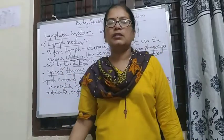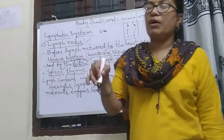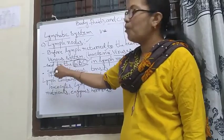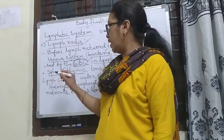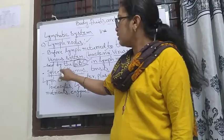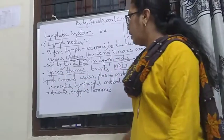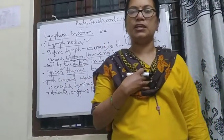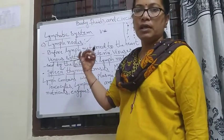Spleen — in the spleen, lymphocytes are produced. It is also a hemopoietic organ before the fifth month — at the time of the fifth month of the baby. In that period, the spleen works as a hemopoietic organ. Next, thymus — the thymus is present in the chest region, and it is also one organ which produces lymphocytes.